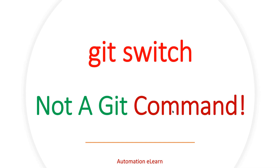Hey guys, welcome back to Automation Elon. You might have heard about the switch command in Git, but when you try to execute the git switch command you encounter an error saying 'git switch is not a git command.' Someone approached me with the same issue, so I'm covering this topic here to share with you all.